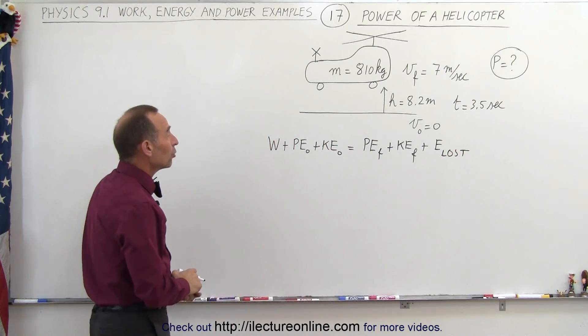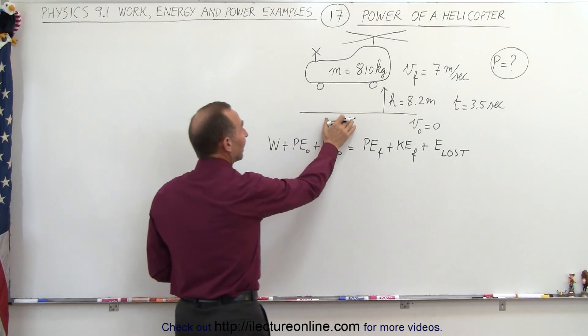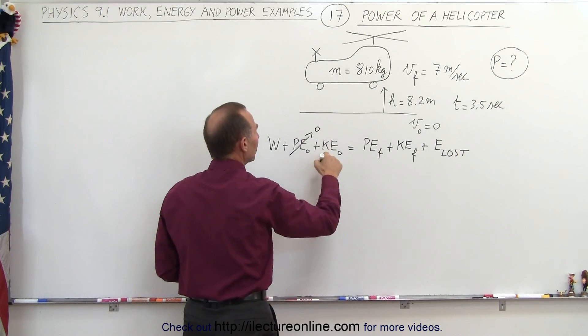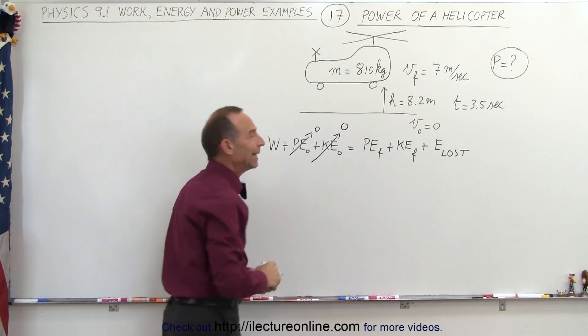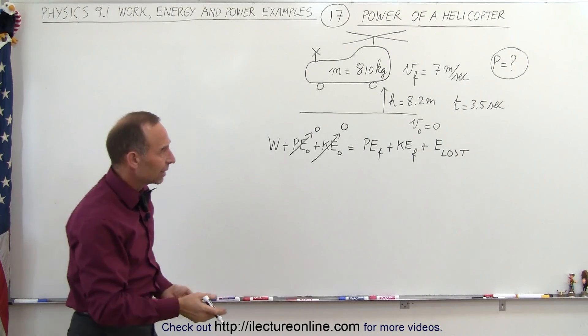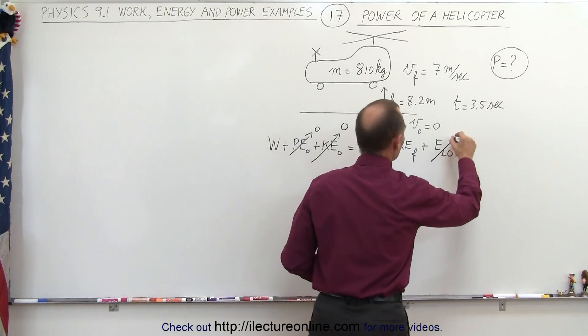When we take a look at this equation, notice that we did not have any height in the beginning. We were on the ground, so there's zero potential energy, and we were not yet moving upward, so there was zero kinetic energy initially. Also, there's no friction or anything like that, so no energy is presumed to be lost.